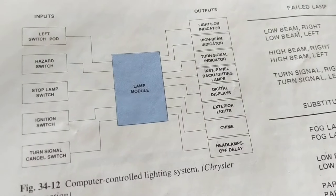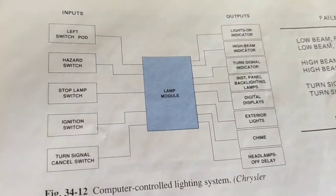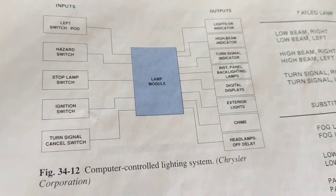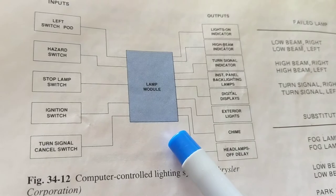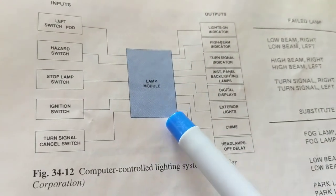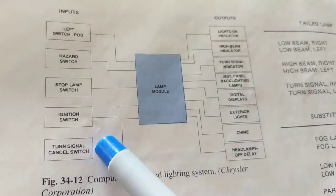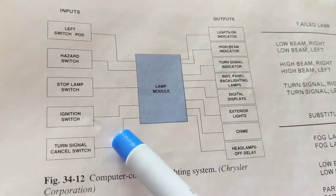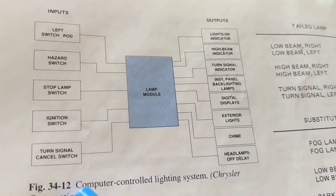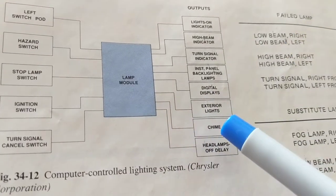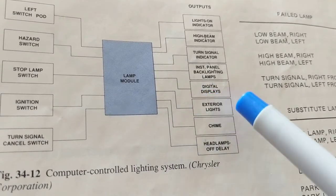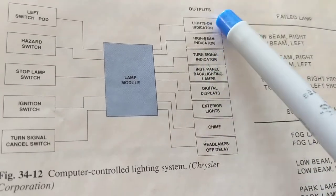Here's an analogy using lighting. In the old days you'd flip a switch and the headlamps and parking lamps came on — the switch went directly to the bulbs. Later, just like with the engine, we put a module — another computer — in between. The switches are the inputs: hazard lights, brake lights, parking lamps, turn signals. The outputs are the lights themselves, the exterior lights, and the chimes you hear when you open the door with the key still in. These are the outputs.